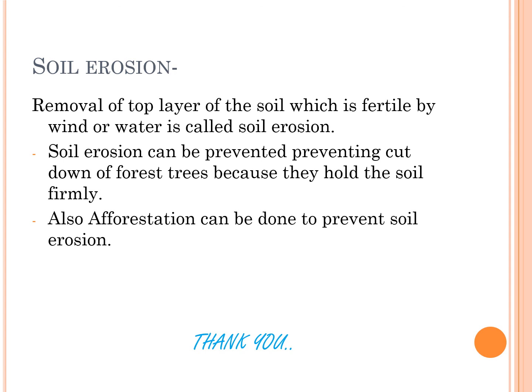Soil erosion can be prevented by planting more and more trees, that is, by afforestation. If deforestation is done, it is very harmful because trees and crops hold the soil together. So afforestation can be done to prevent soil erosion. Thank you.